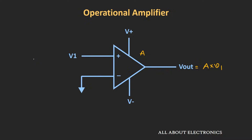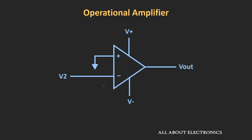If we apply a sinusoidal signal to the non-inverting input, then at the output that signal gets multiplied by the gain and we get an amplified sinusoidal signal. The phase of the output voltage will be the same as the input voltage. However, when we apply the input to the negative terminal and ground the other terminal, the output will be equal to minus A times V2, giving an amplified sinusoidal signal with a 180-degree phase shift with respect to the input — that is why this terminal is known as the inverting terminal.